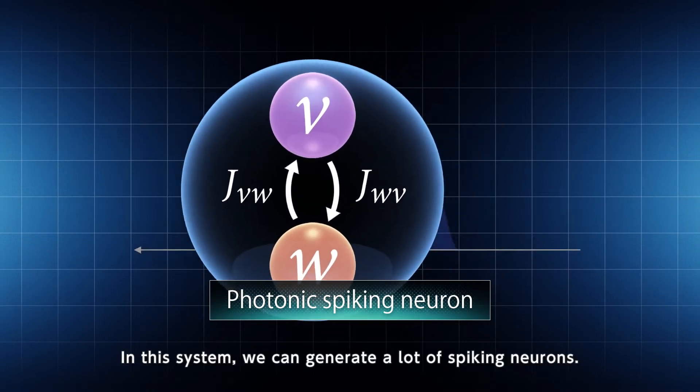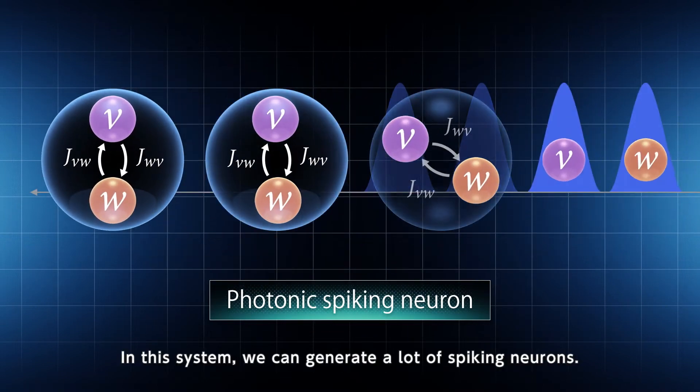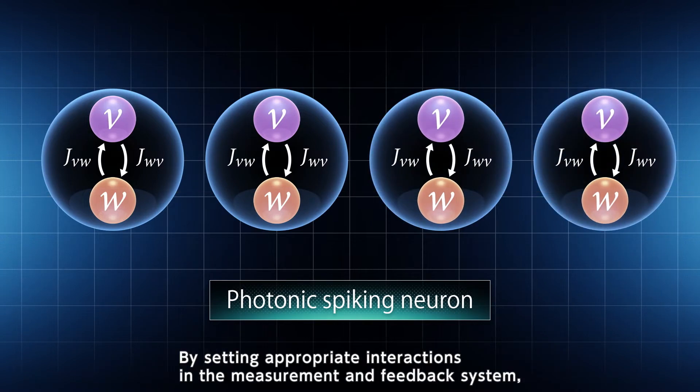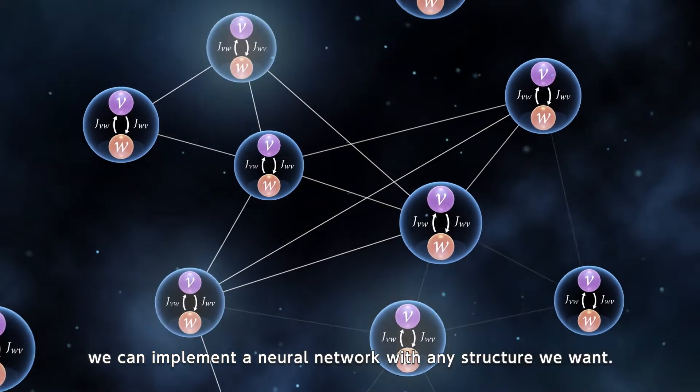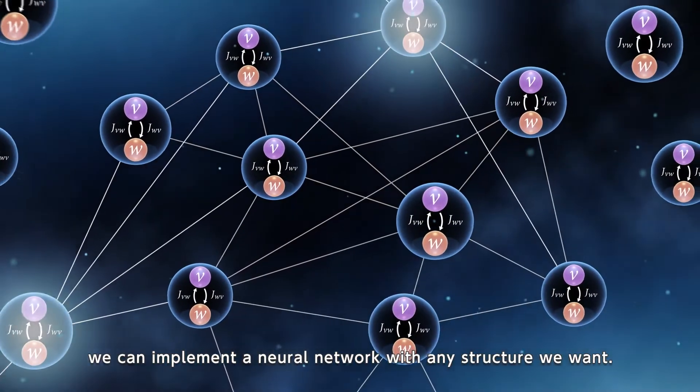In this system, we can generate a lot of spiking neurons. By setting appropriate interactions in the measurement and feedback system, we can implement a neural network with any structure we want.